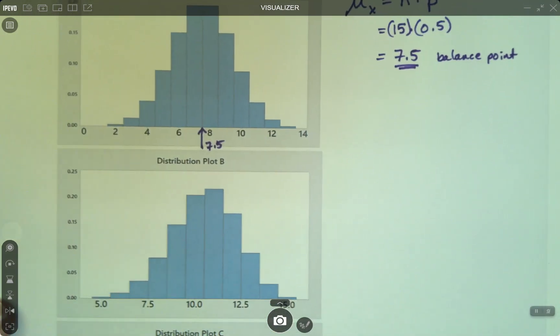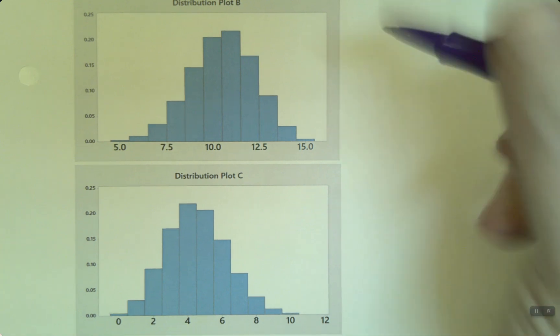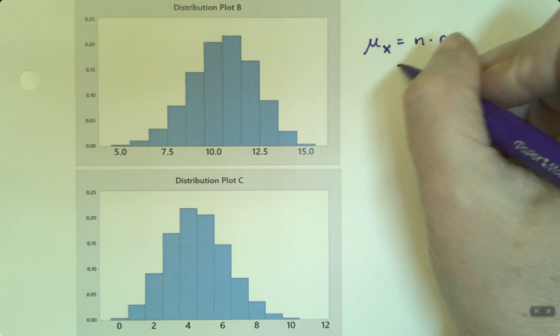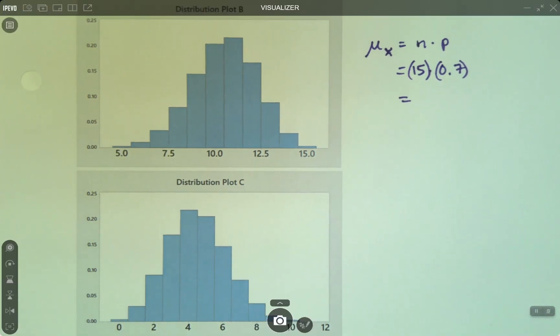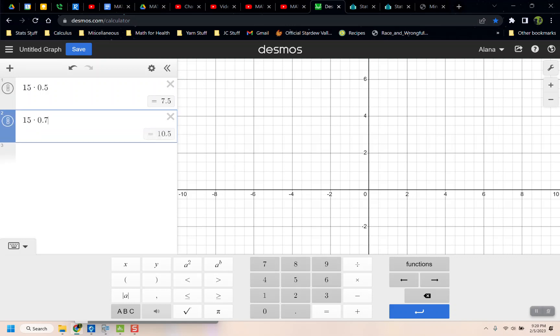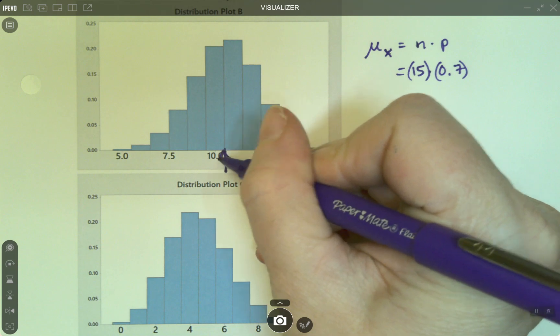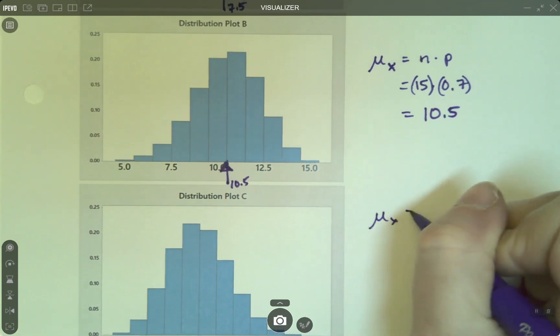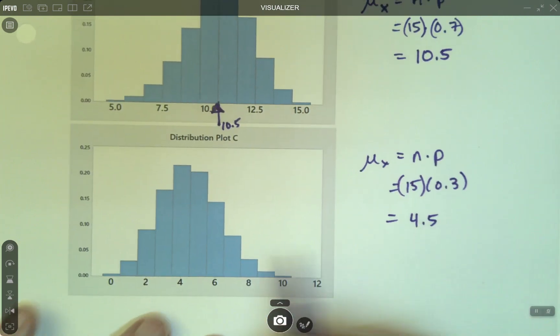Now let's look at the other two. One of these has to be for the probability of success is 0.3, and one has to be 0.7. Which, when you think about it, if p is 0.7, that means you expect high values. So n times p is 15 times 0.7. And you can use parentheses or you can use a dot, it doesn't matter. So let me grab 15 times 0.7, and while I'm on the subject, 15 times 0.3. So 10.5 and 4.5 should be the other balance points. So look at this, this one's balancing at about 10.5. So there's your balance point right there. And then this one is 15 times 0.3, which is 4.5. And that's your balance point right there.